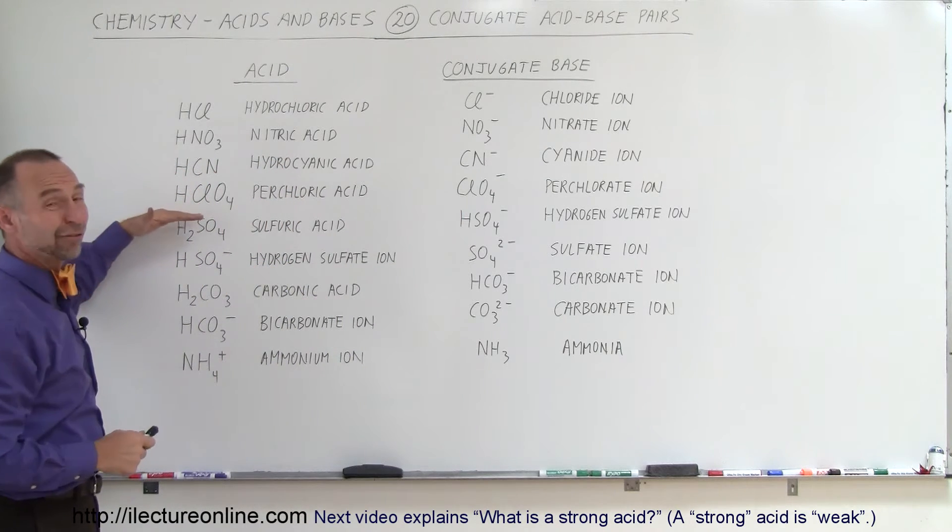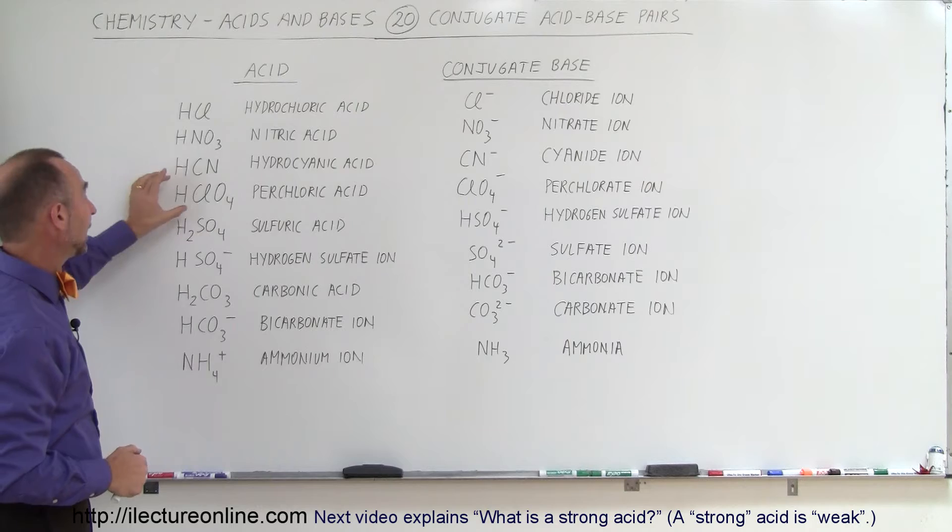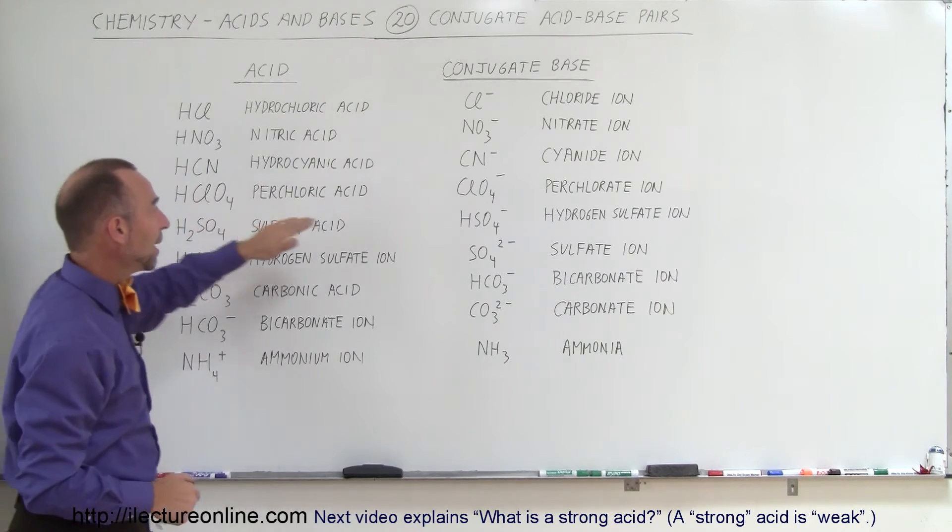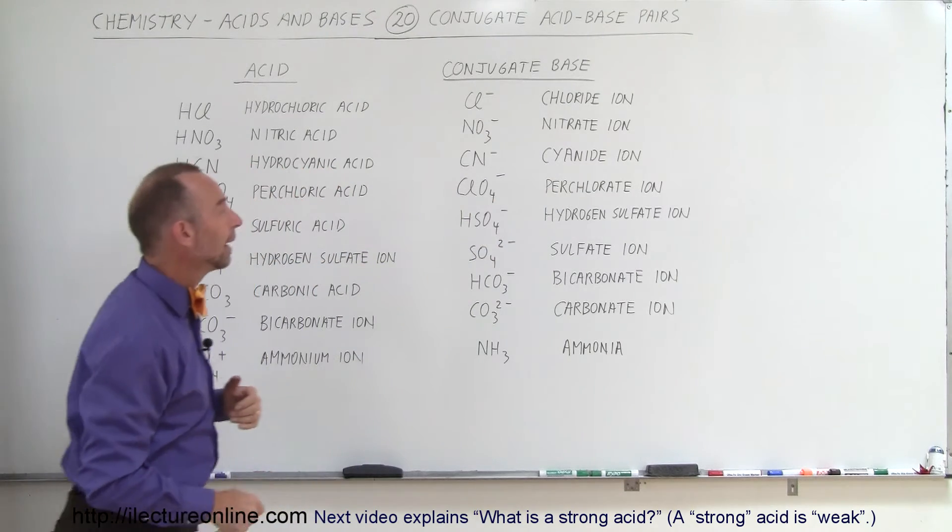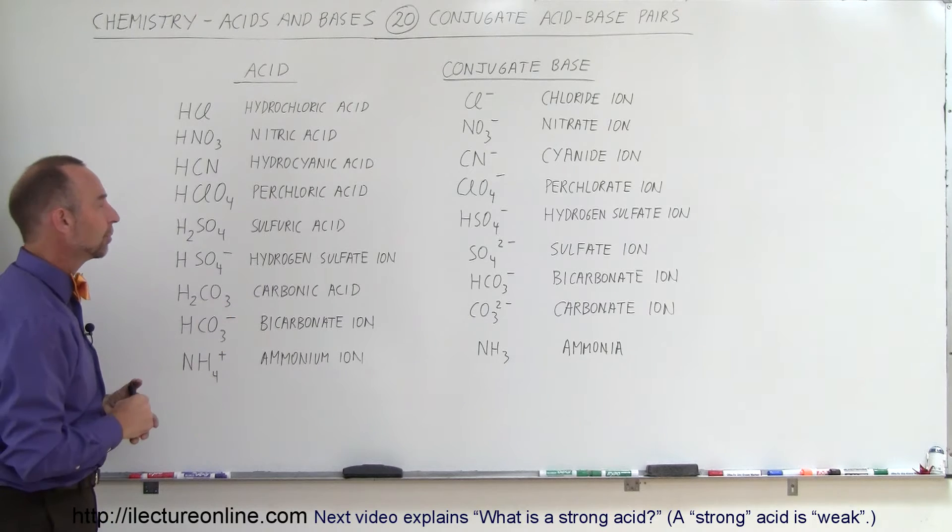Here we have perchloric acid. It's a very strong acid. And again, hydrogen will separate. What's remaining is the perchlorate ion, and that's therefore what we call the conjugate base.